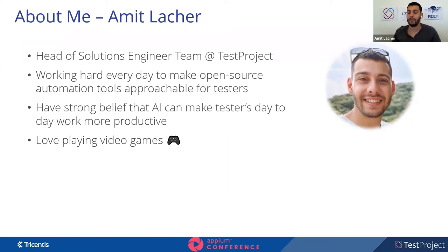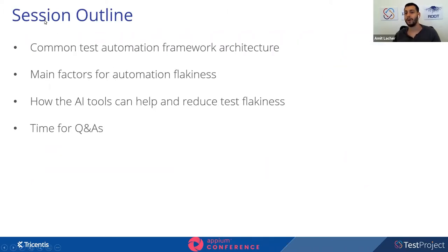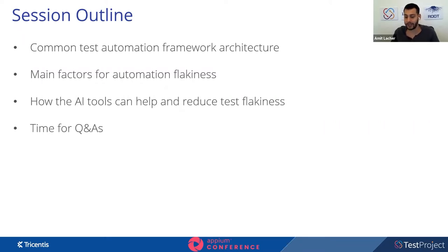We will also be at our booth at the Test Project booth at the end. Let's begin with the session outline. We'll cover how a common test automation framework and architecture looks, then the main factors for automation flakiness, how AI tools can help reduce flakiness and save time, and finally a Q&A section.